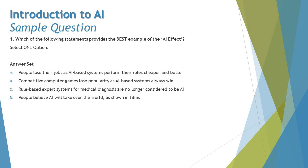Option C says rule-based expert systems for medical diagnosis are no longer considered to be AI. The AI effect is basically the definition of change in AI as technology advances. Rule-based systems for medical diagnosis were popular examples of AI in the early 70s and 80s but are often not considered AI today at all. This is what we refer to as the AI effect, so C seems to be the relevant option.